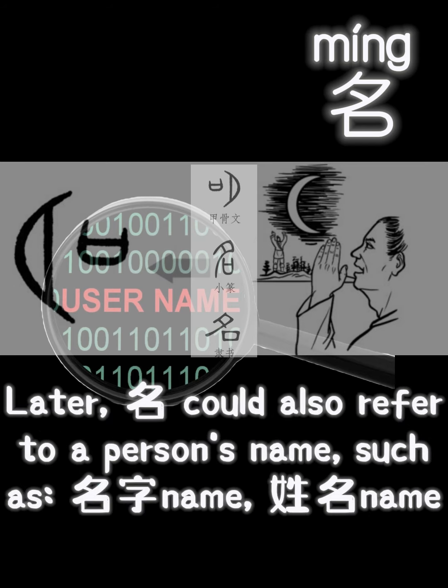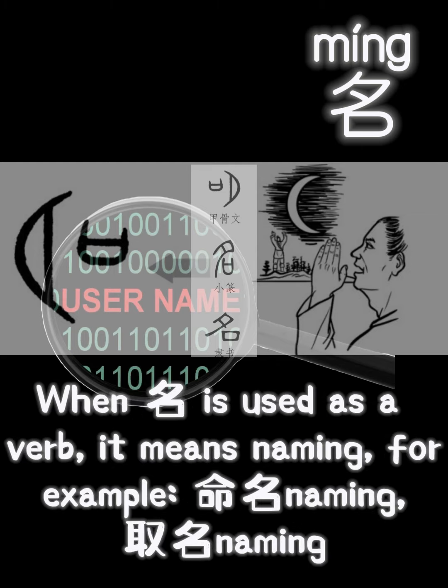Later, 名 could also refer to a person's name, such as 名字 (name) and 姓名 (name). When 名 is used as a verb, it means naming. For example, 命名 (naming) and 取名 (naming).